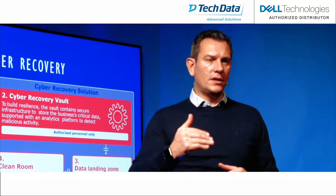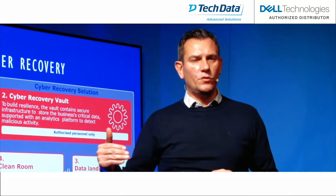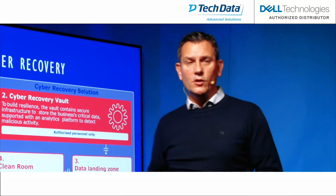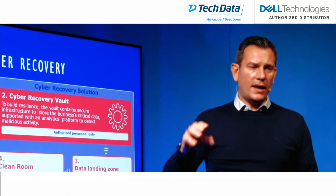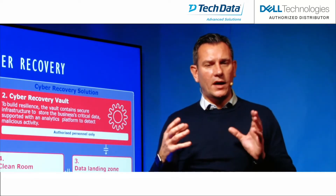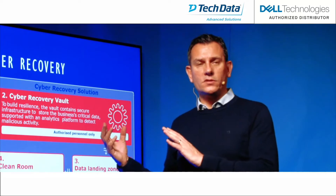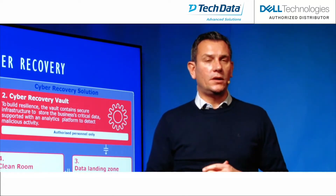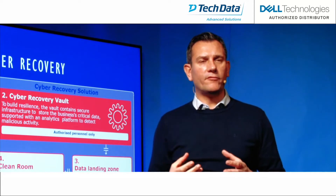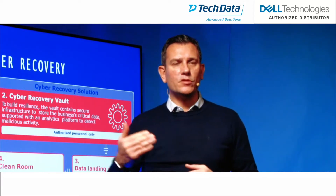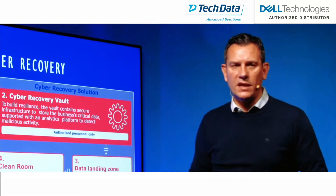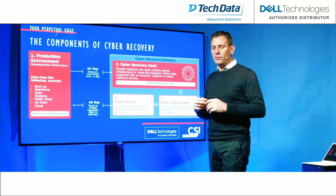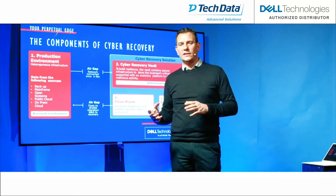There might be corrupted copies within the organization that the organization is not yet aware of. So there's really sophisticated software — AI, cognitive software — that helps scan the vault and the data within it to make sure that it's a good copy. If we needed to recover from it, it's going to enable the business to commence. As it says here, there are a very limited number of people that can access that vault.